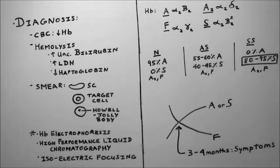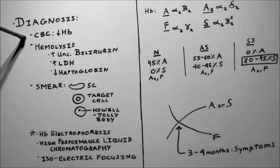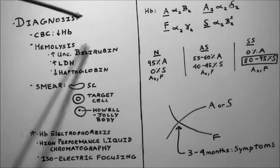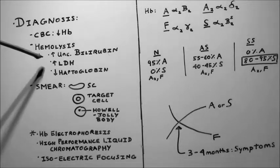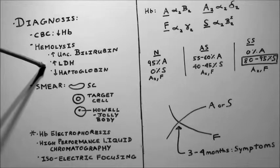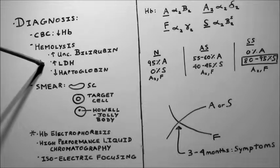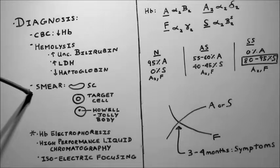So how do we diagnose sickle cell anemia? So we can start with a CBC or a complete blood count and we're going to look for evidence of anemia or a drop in hemoglobin. We can also look for lab evidence of hemolysis. So you'll see an increase in unconjugated bilirubin, an increase in lactate dehydrogenase, and a drop in haptoglobin.